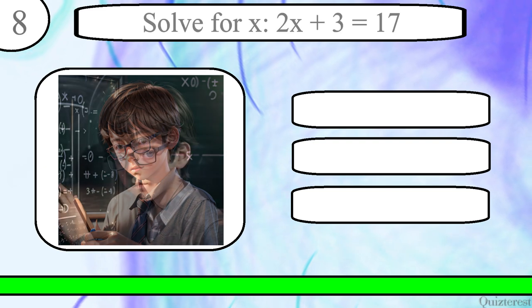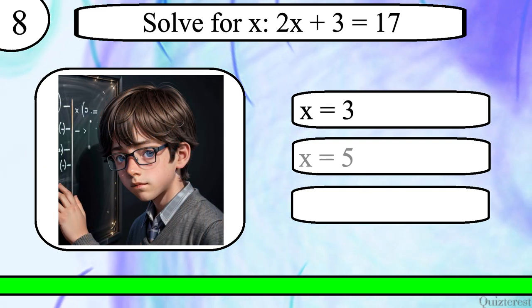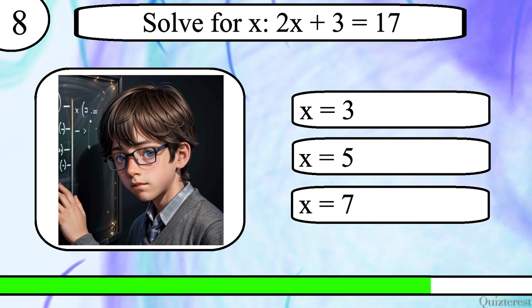Question 8. Solve for x, 2x plus 3 equals 17. x equals 3, x equals 5 or x equals 7. The correct answer is x equals 7.